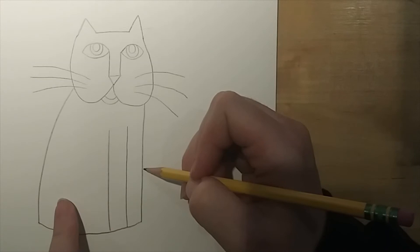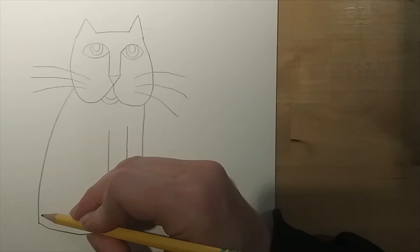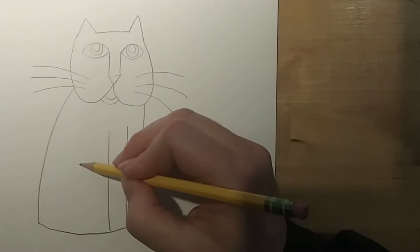But instead we're going to put a tail in this space. So you could do a curvy line tail, a spiral shaped tail, maybe your tail is a zigzag, however type of line you want your tail to be.